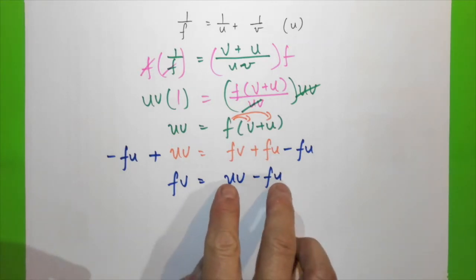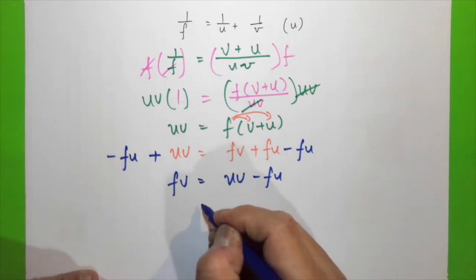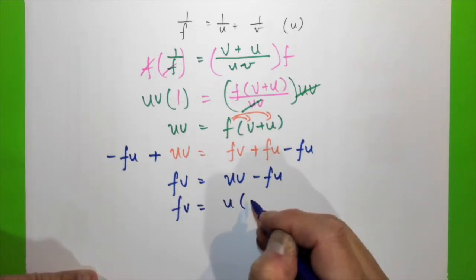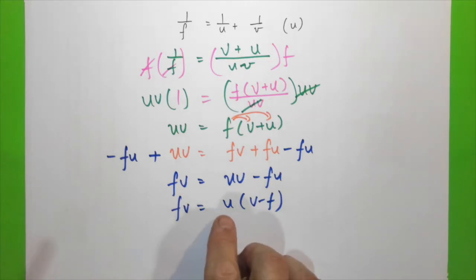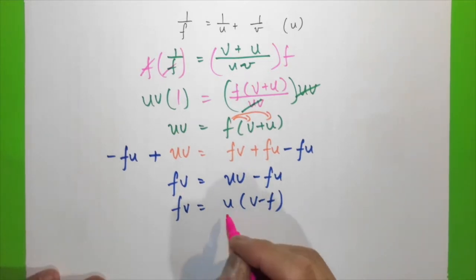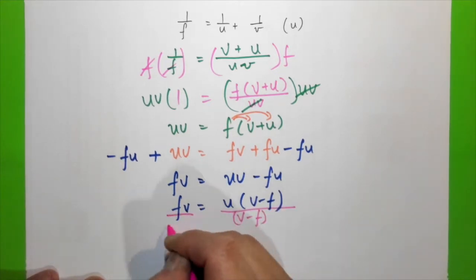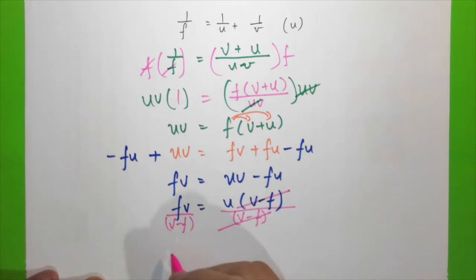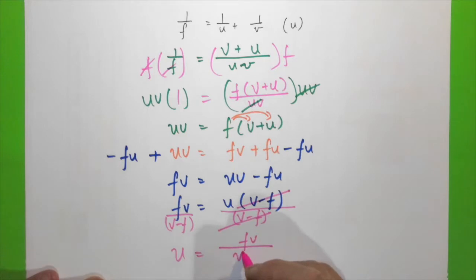Now that we want u as the subject, we can factorize: fv = u(v − f). To make u the subject, we divide both sides by (v − f) to eliminate it. Therefore u = fv over (v − f).